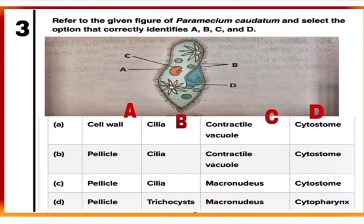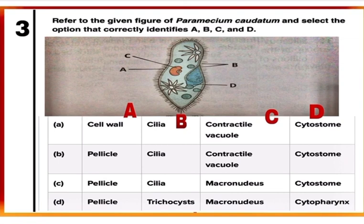Question 3: This figure is of Paramecium caudatum. Identify A, B, C, and D in the figure. Paramecium is a ciliated protozoan belonging to kingdom Protista. In the given figure, A is pellicle which is a stiff but elastic membrane, B are cilia which help in movement, C is the macronucleus (Paramecium has one macronucleus and one micronucleus), and D is the cytostome or cell mouth of Paramecium. Correct option is C.